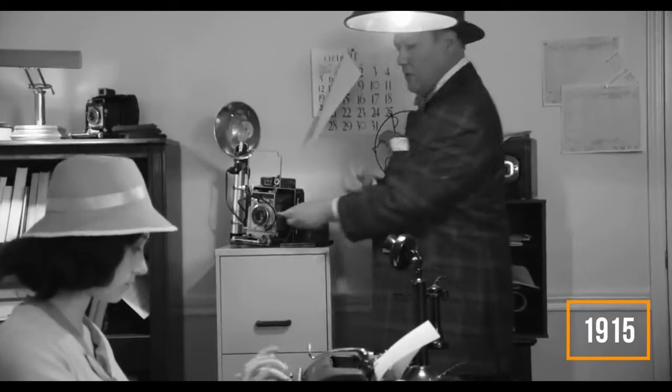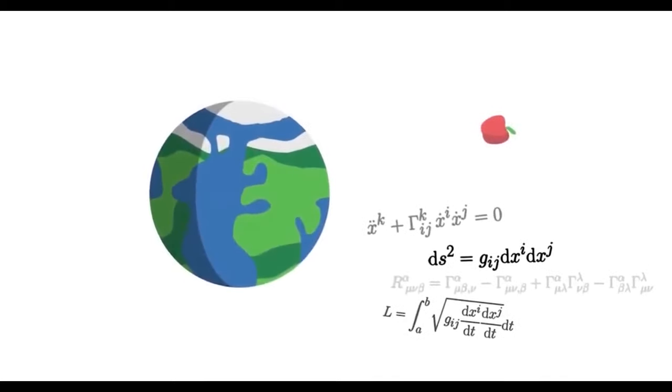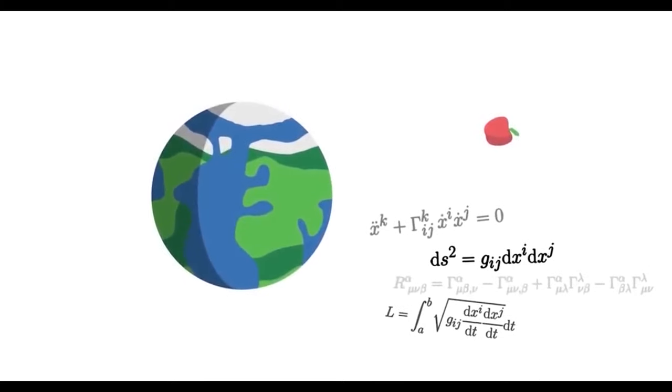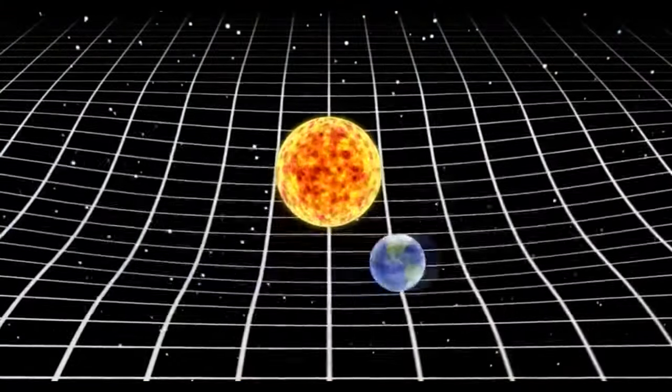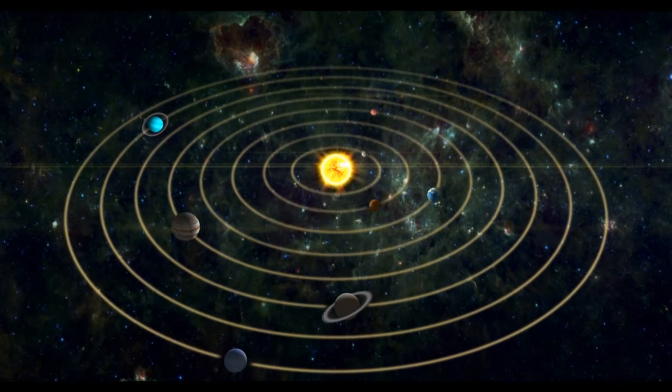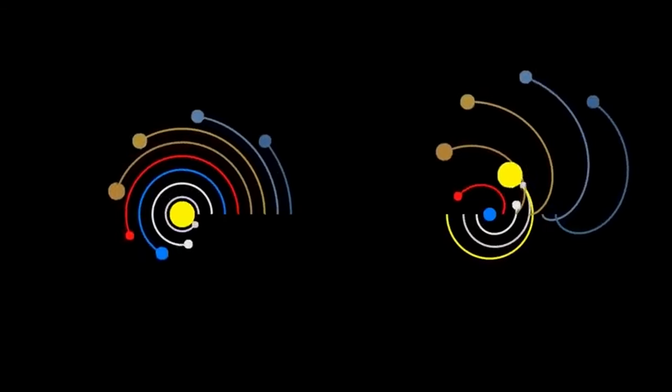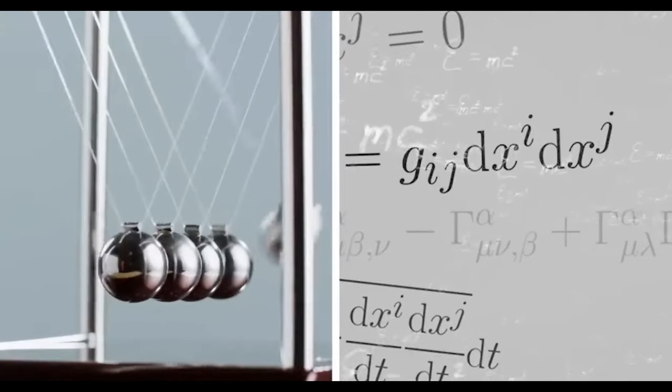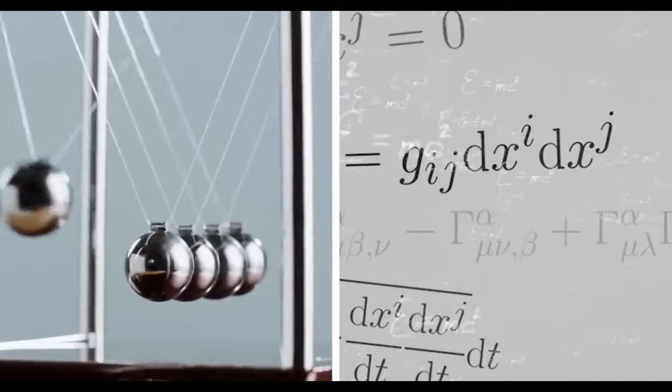In 1915, Albert Einstein presented his general theory of relativity, which redefined our comprehension of gravity and space-time. Einstein suggested that massive objects, such as the Sun, cause a curvature in the four-dimensional fabric of space-time. Earth orbits the Sun because it follows this curve. The transition from Newtonian gravity to Einstein's general relativity underscores the evolving nature of scientific understanding.